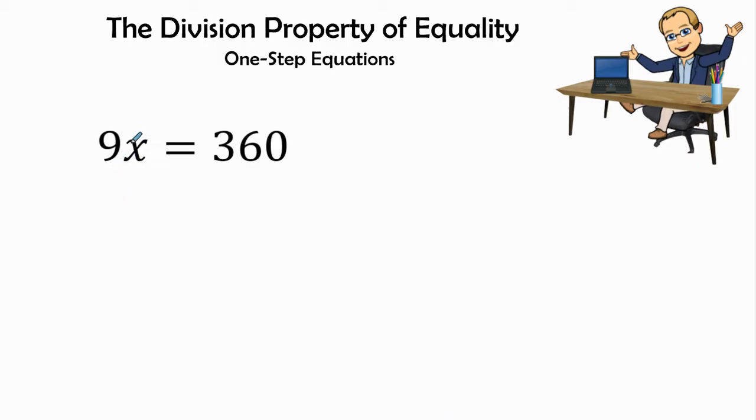When I see my 9 and x together, anytime I see a coefficient next to a variable, it really means that we are multiplying those two values. Whatever that x value is, we're going to multiply it by 9.